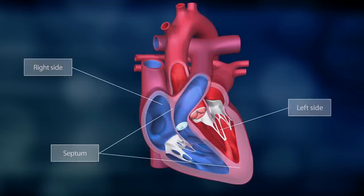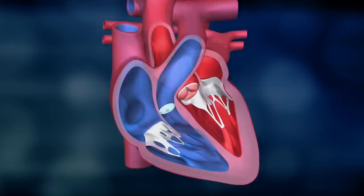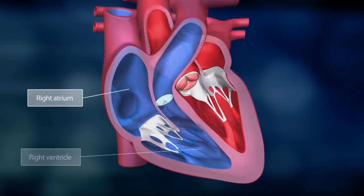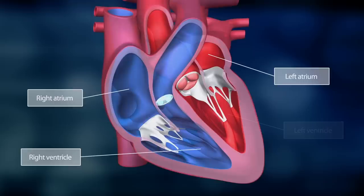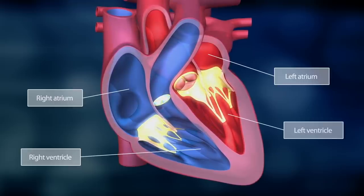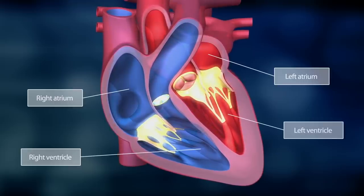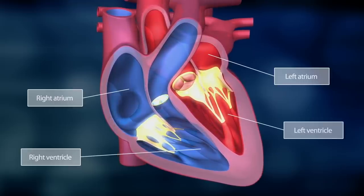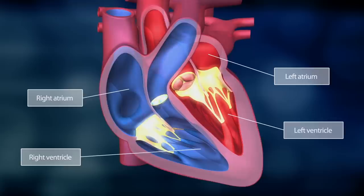The heart has four chambers: the right atrium with the right ventricle, and the left atrium with the left ventricle. Four valves regulate the flow of blood through the heart, its chambers, and into the circulation.